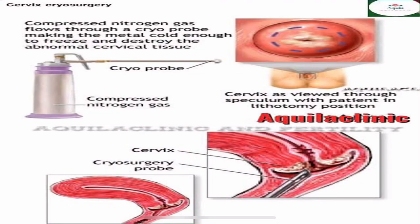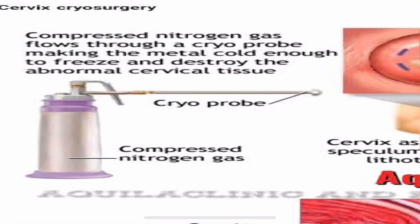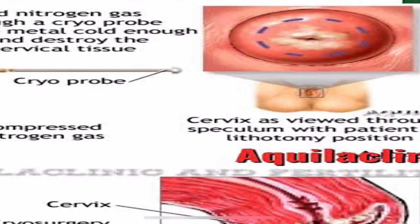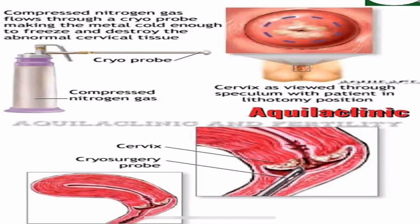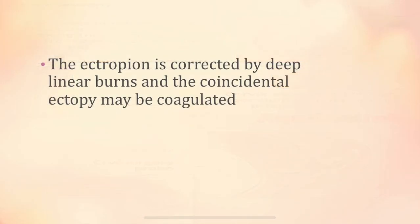In cervical cryosurgery, compressed nitrogen gas is flowed through a cryoprobe, making it cold enough to freeze and destroy the abnormal cervical tissue. Ectropion can also be corrected by deep linear burns, and coincidental ectopy may be coagulated.